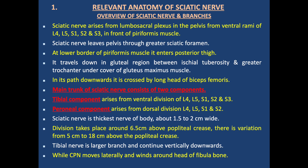Relevant Anatomy of the Sciatic Nerve — Overview of the sciatic nerve and its branches. The nerve arises from the lumbosacral plexus in the pelvis, from the ventral rami of L4, L5, S1, S2, and S3 nerve roots, in front of the piriformis muscle.